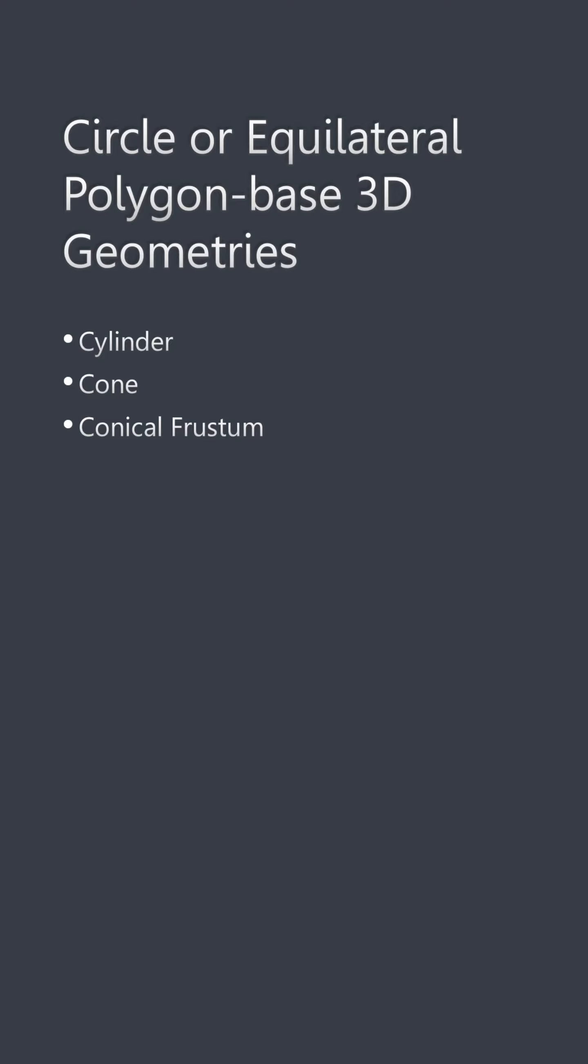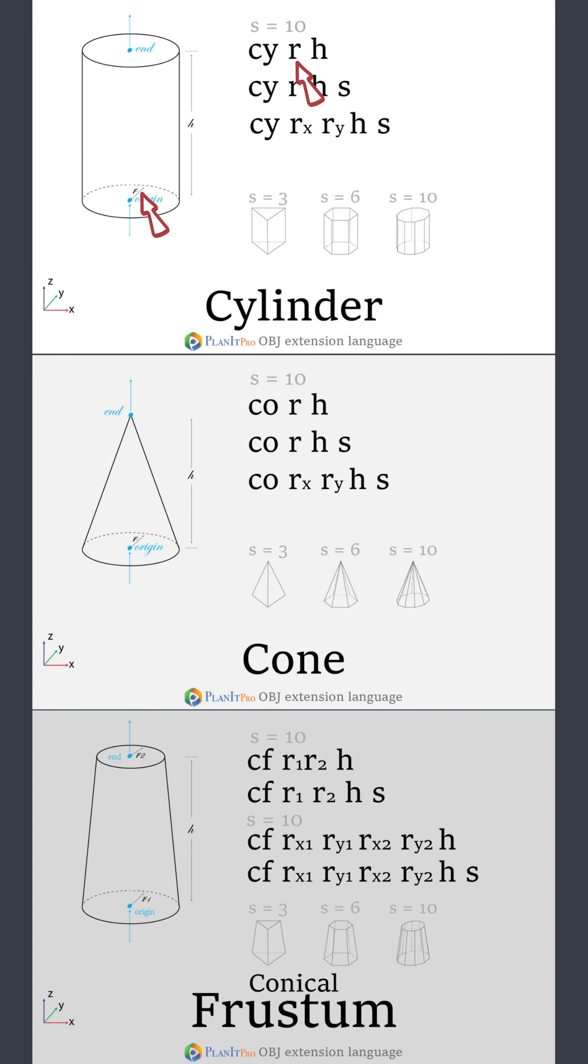The next group of geometries are 3D geometries that have a base of a circle or an equilateral polygon. In this group we define radius instead of length and width because all the shapes are symmetrical. The S parameter will determine the number of sides for the base. By default it's 10, which means the base will be a decagon that almost looks like a circle. If you want more sides you can increase the S value all the way to 50.